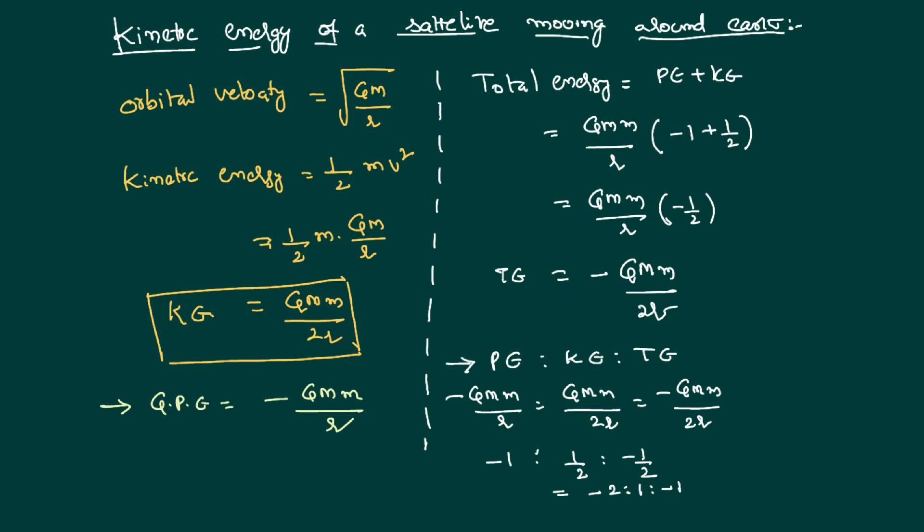So you might have noticed that potential energy is actually double that of kinetic energy and also has a negative sign. Both potential energy and total energy are negative. The magnitudes of total energy and kinetic energy are the same, but they are opposite in sign.